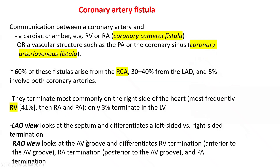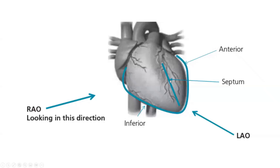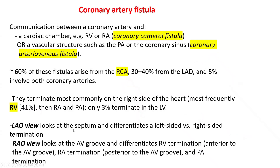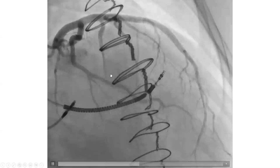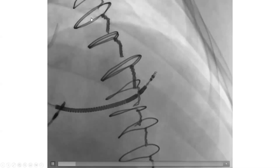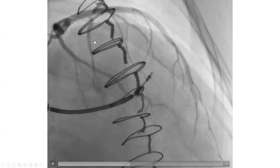In order to confirm where that fistula is landing, we need to do an LAO view and confirm that it is indeed in the right ventricle, not the left ventricle. Unfortunately in this case I don't have an LAO view, but overwhelmingly it is in the right ventricle. Most coronary cameral fistulas land on the right side of the heart, most frequently the RV, then the RA. Only 3% terminate in the LV. And this may not even be a septal — it may be the fistula itself between the LAD and the right ventricle, the fistula's track, since we don't see ramified branches into the septum from that artery.